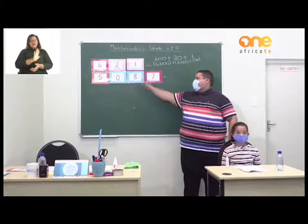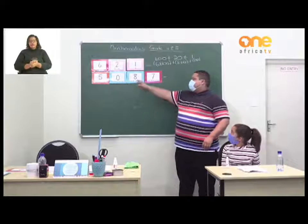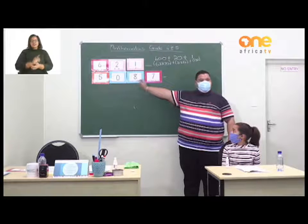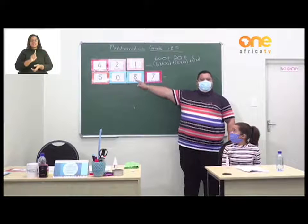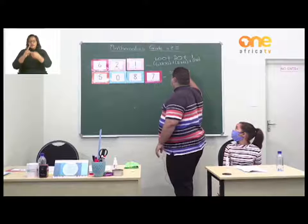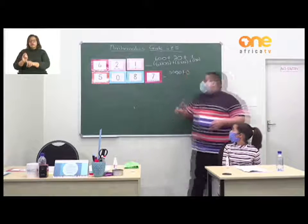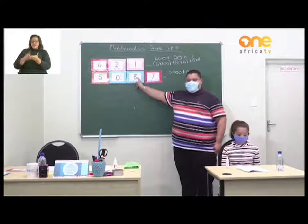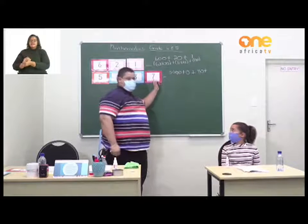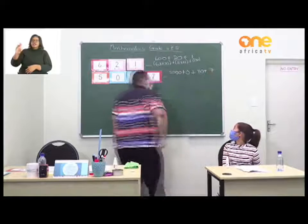Five thousand and eighty-seven. Let's write it. The first number is the 5. What is the value of the 5? According to place value, the 5 is in the thousands place, giving it a value of 5,000. We don't have any hundreds, so we write zero hundreds. Then the 8 is in the tens place, giving it a value of 80.